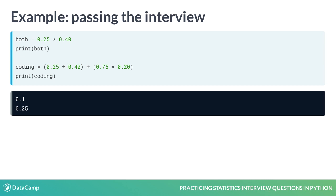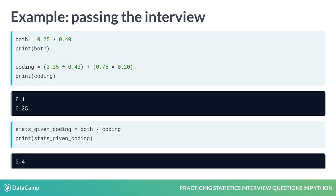Now that we have our numerator and denominator, we can divide 0.1 by 0.25. This comes out to applicants having a 40% chance of passing the stats interview, given they passed the coding interview.